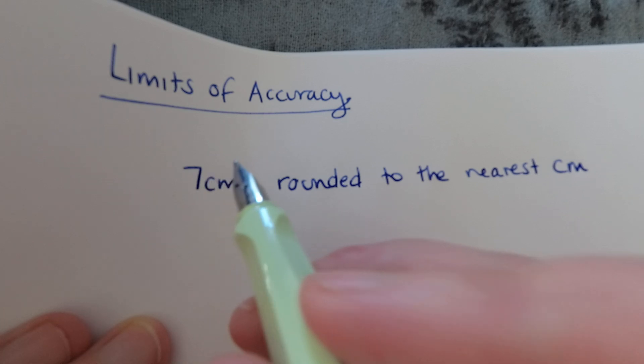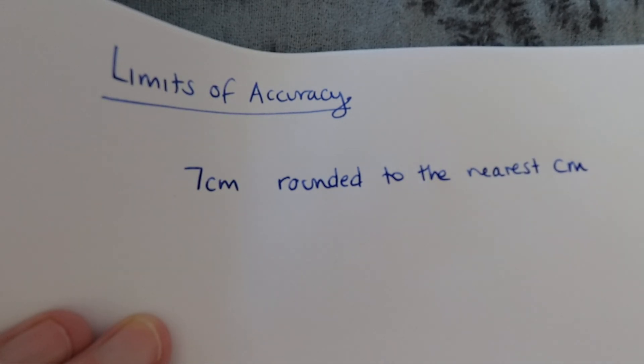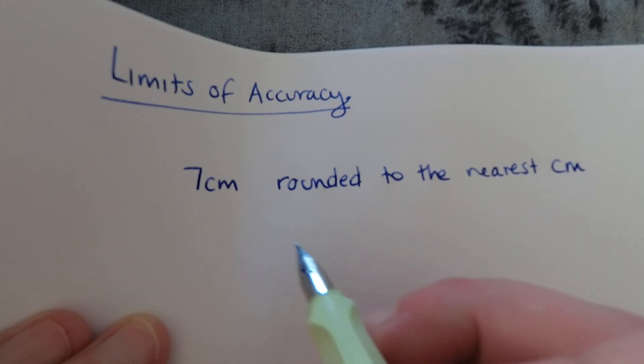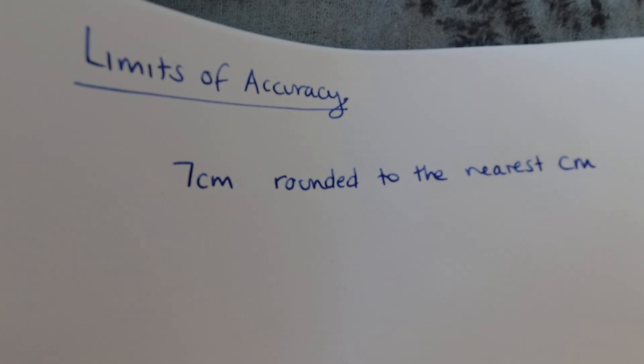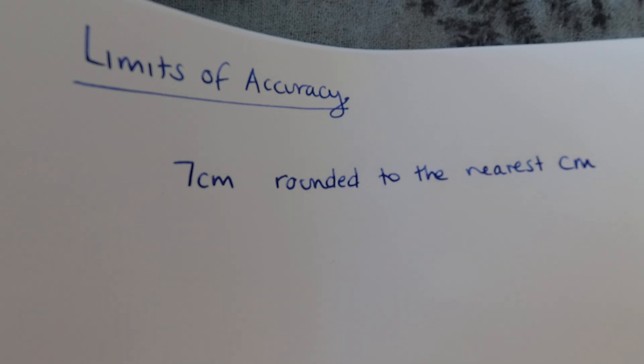So I need to work out what this true value could have been if the person who was measuring it could have done it more accurately. In order for something to be rounded to 7 centimeters to the nearest centimeter, it could have been for example 6.9 which would round up to 7, it could have been 7.2 that would round down to 7, but it couldn't have been 7.8 for example because that would round up to 8. So we know that there must be a limit to what the actual answer could have been.